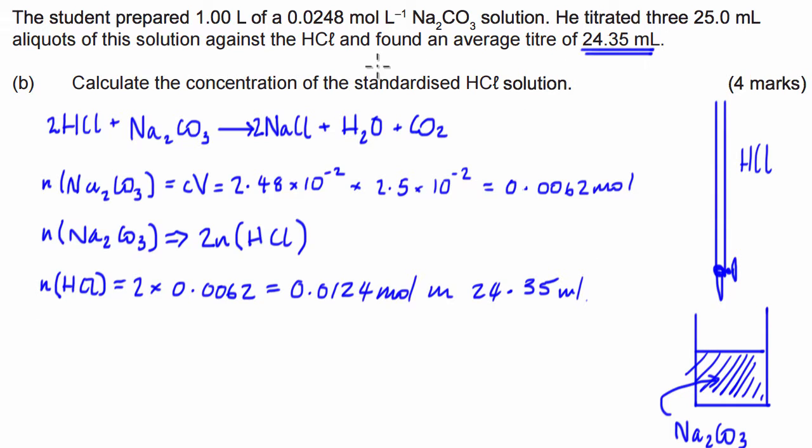We've been asked to work out the concentration of this, so from here it's quite simple. The concentration of hydrochloric acid is equal to the number of moles divided by the volume, and this is going to be equal to